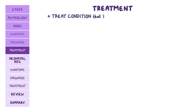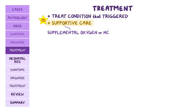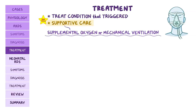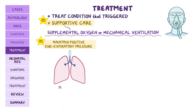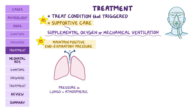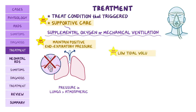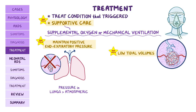Treatment of ARDS ultimately comes down to treating the condition that triggered it. However, the most important initial step is supportive care like supplemental oxygen or mechanical ventilation. It's vital to maintain positive end-expiratory pressure (PEEP), which keeps pressure in the lungs slightly above atmospheric pressure even after exhalation, preventing alveolar collapse. Low tidal volumes are also important to prevent overinflation of the damaged alveoli.